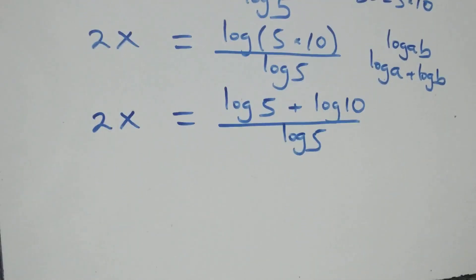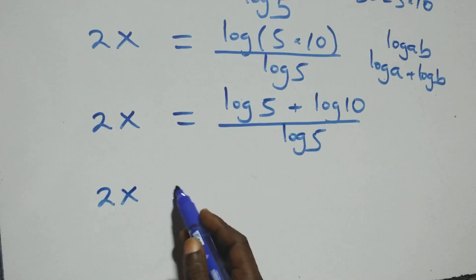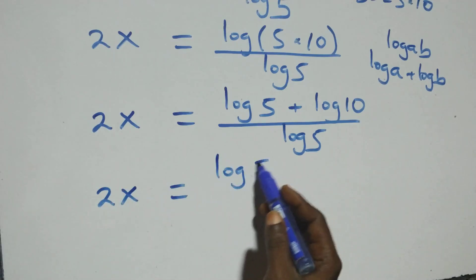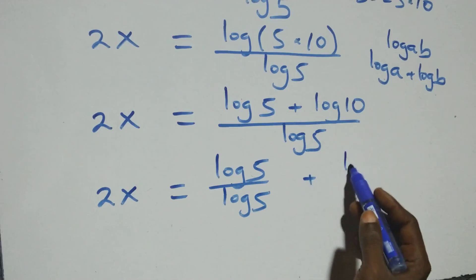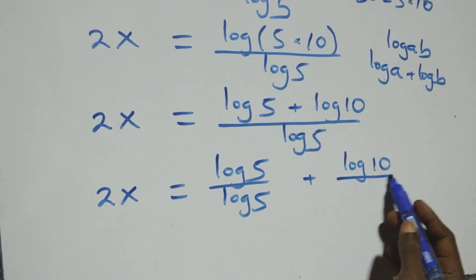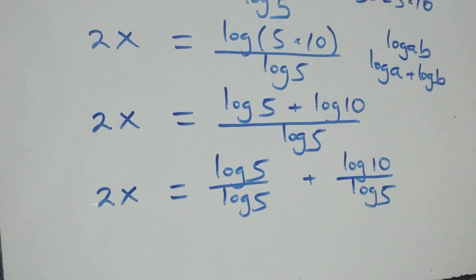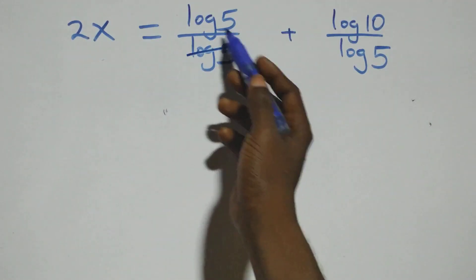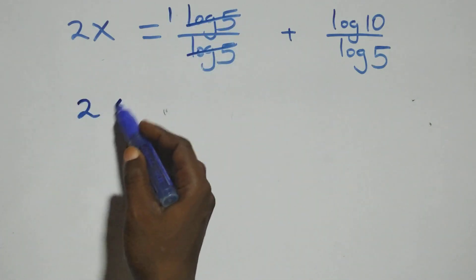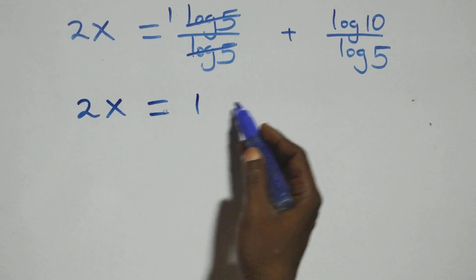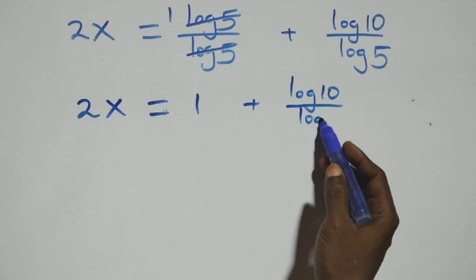We separate this into two fractions: 2x equals log 5 over log 5, plus log 10 over log 5. The log 5 terms cancel each other in the first fraction, leaving 1, so 2x equals 1 plus log 10 over log 5.